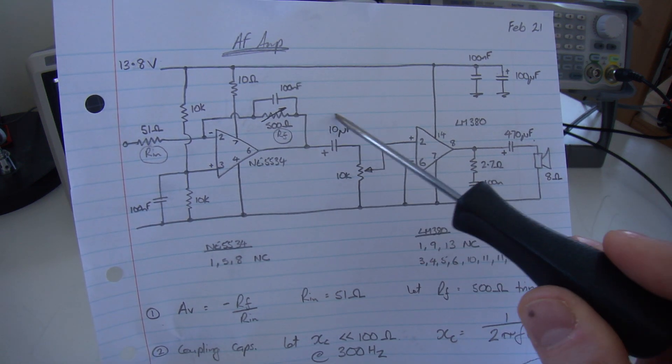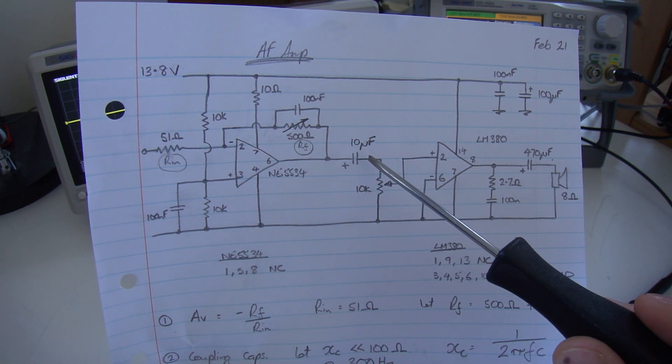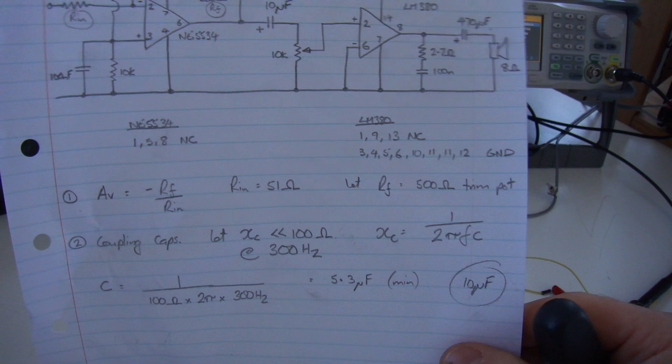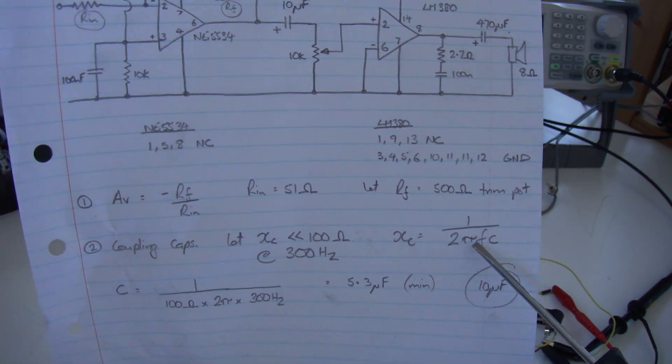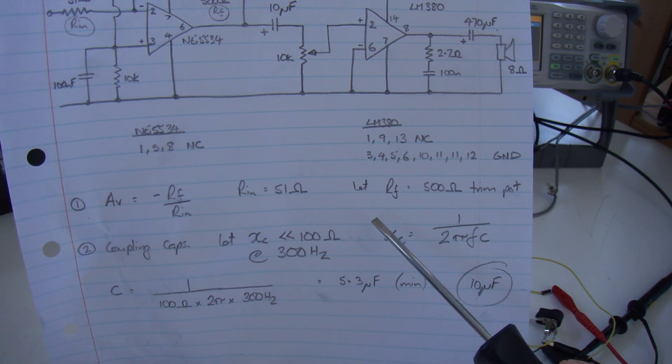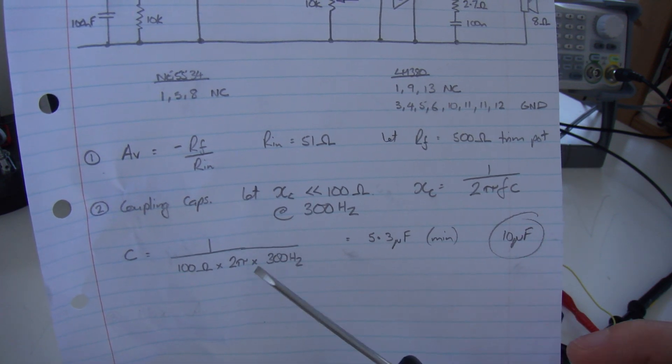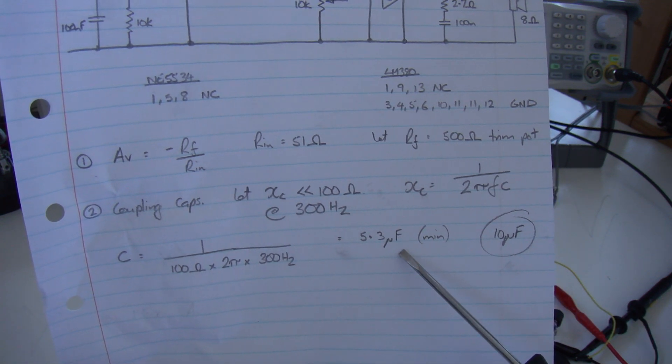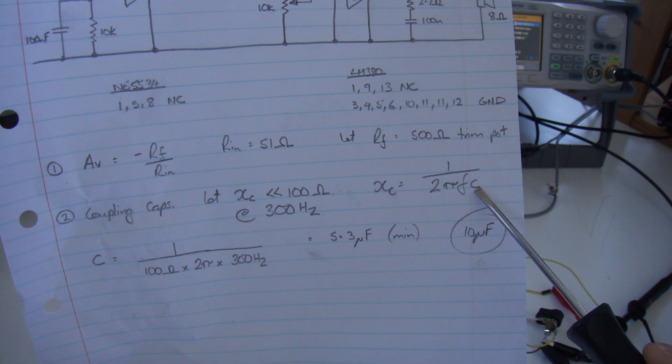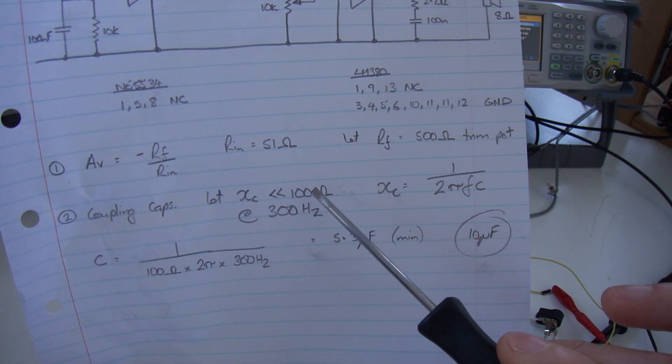The last thing to mention is that 10 microfarad capacitor there. What I elected to do, using that rule of thumb, is making sure that the capacitive reactance at the lowest frequency of operation is no greater than 100 ohms. We know that Xc equals 1 over 2 pi fc, so using that and rearranging that formula to make capacitance the subject, we can plug in our values. 100 ohms times 2 pi times 300 hertz, under 1, comes out at 5.3 microfarads. I'm going to double that and use a 10 microfarad capacitor because any increase in capacitance results in a decrease in capacitor reactance. In other words, I meet my requirements even more.